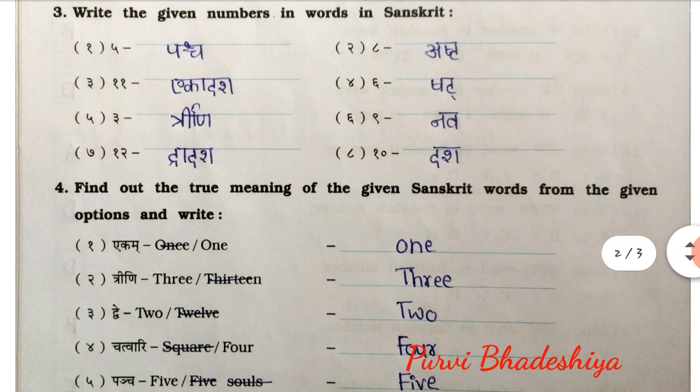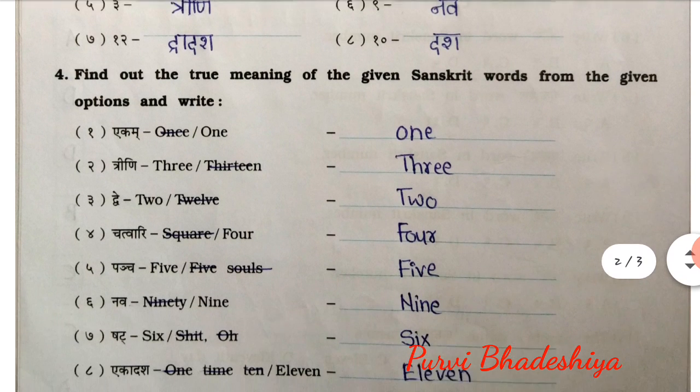Exercise number 3: Write the given numbers in words in Sanskrit. First one — Puncha. Second — Ast. Third — Ekadash. Fourth — Shatter. Fifth — Trini. Sixth — Now. Seventh — Dwardash. And eighth — Dash.